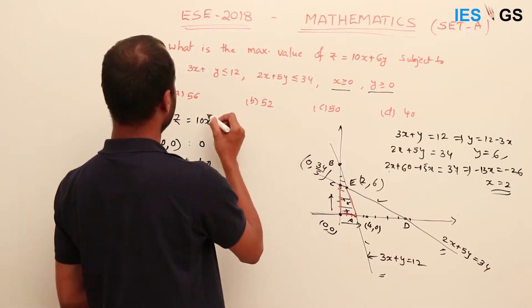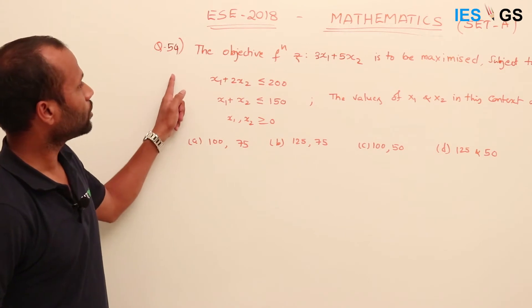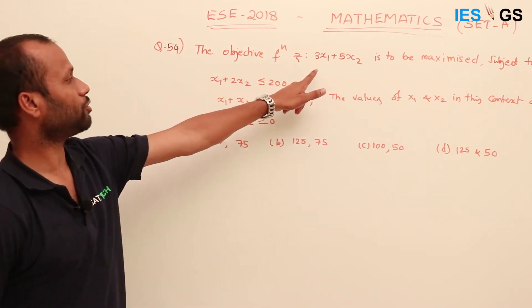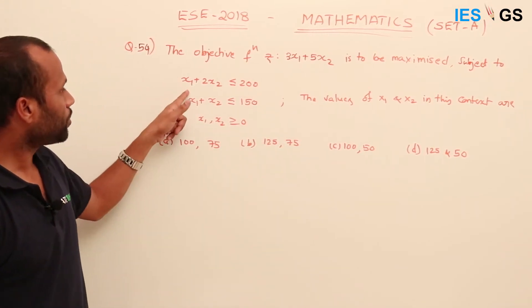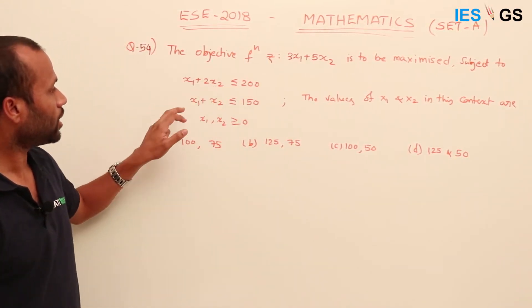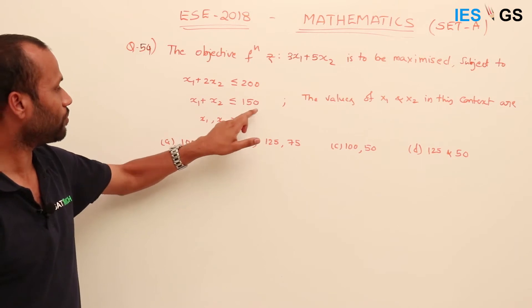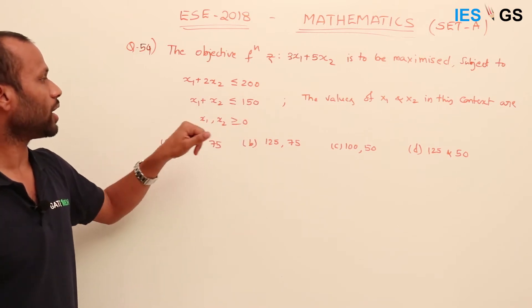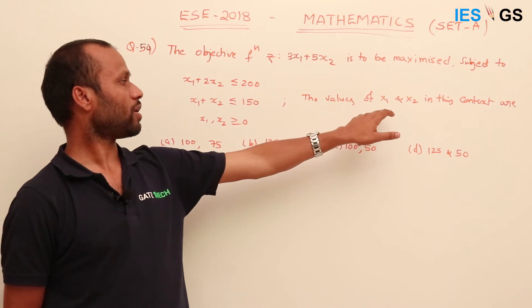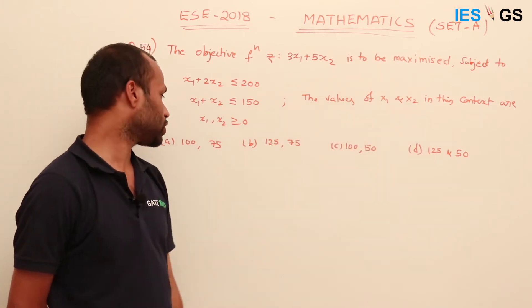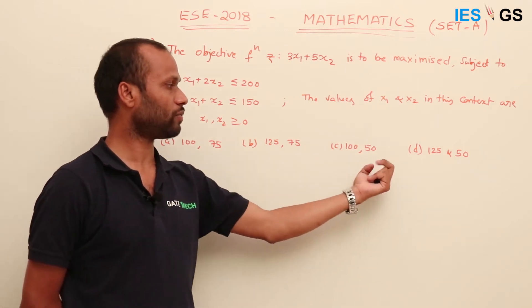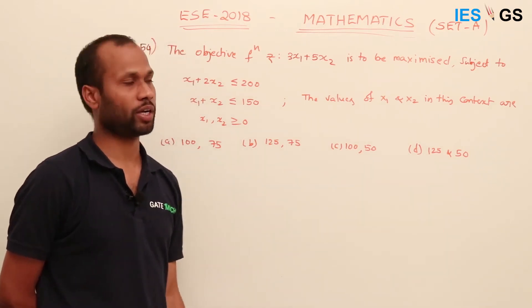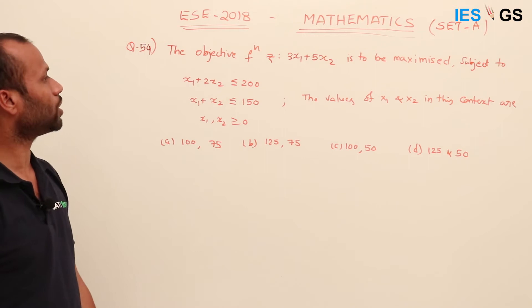The maximum value of z is 56, so the answer is option A. Now question number 54: the objective function z = 3x₁ + 5x₂ is to be maximized subject to the constraints x₁ + 2x₂ ≤ 200, x₁ + x₂ ≤ 150, x₁, x₂ ≥ 0. The question asks for the values of x₁ and x₂ that maximize the function. Options are given as (175, 100), (75, 150), (125, 50), etc.